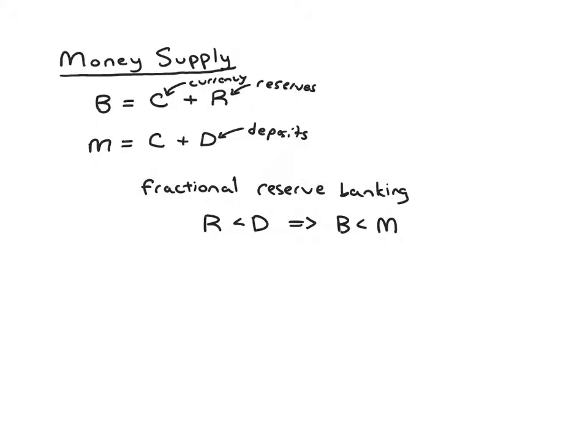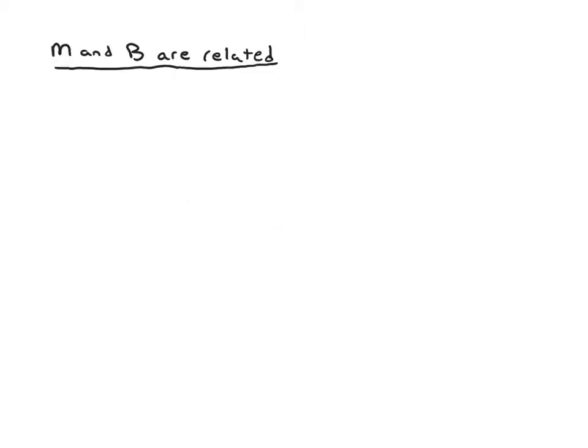So what we'd like to do then is ask, can we get a specific expression for how B and M are related? We know B and M are related—they both have C's in it, D and R are related. So how are B and M related? We're going to think more about that.